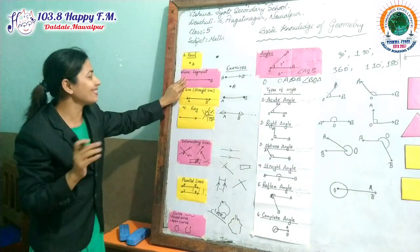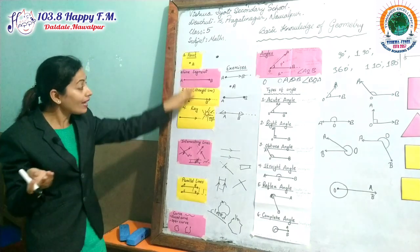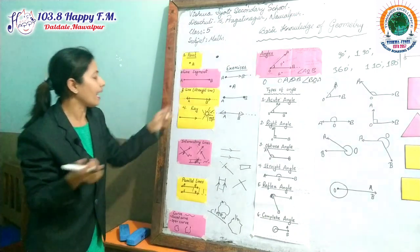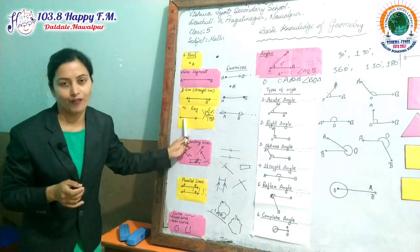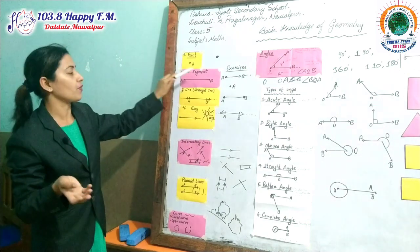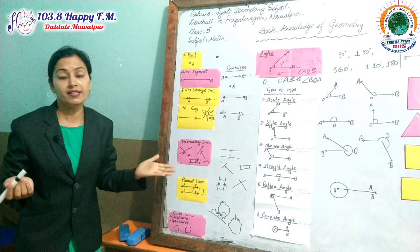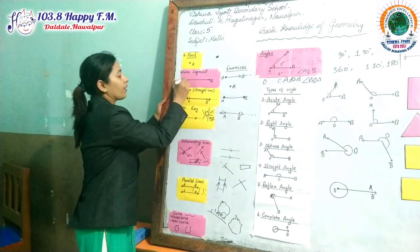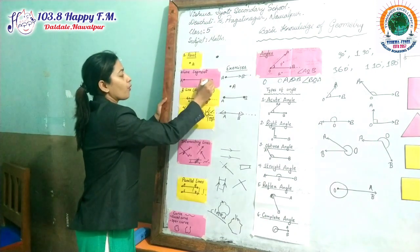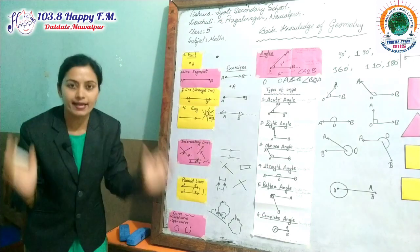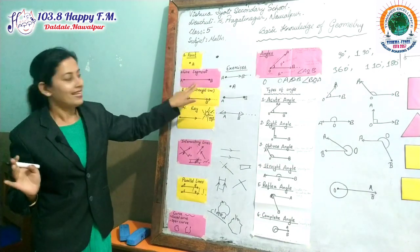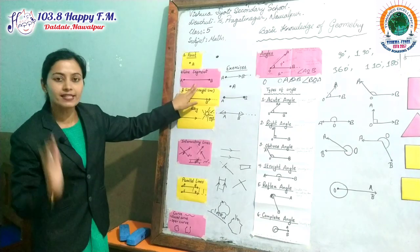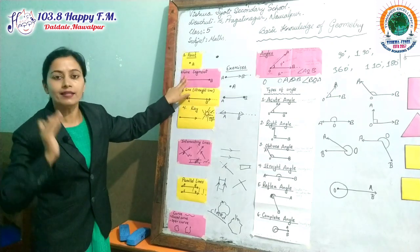The next topic is line segment. We are going to discuss three types of lines: line segment, straight line, and ray. First, I am going to discuss line segment. Line segment means the beginning or origin point and the ending point of the line are both fixed. It may be 5 cm or 6 cm — it cannot be extended. It is a fixed line. That's why it is called a line segment.